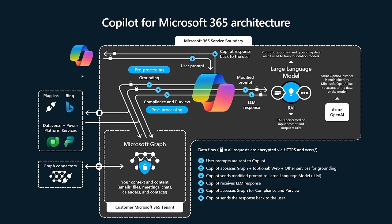So first off, your prompt comes in and it goes through the Copilot orchestration service. The orchestration service, as a first step, sees the prompt and needs to process it. There are a few things it does, but it needs to interpret what you're asking.